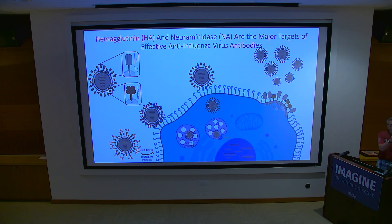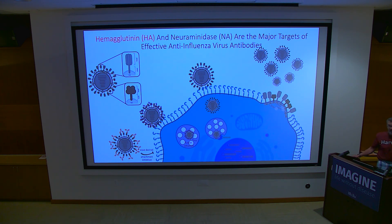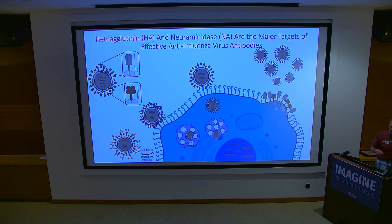Anti-stem antibodies can bind the stem of the HA and prevent the conformational changes required for the virus to fuse with the host membrane. Flu is internalized into early endosomes; the lowered pH triggers HA conformational change, liberating the fusion peptide, which integrates the viral and host membranes and delivers viral cores to the cytosol.